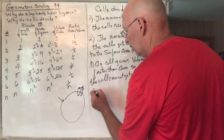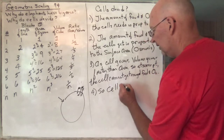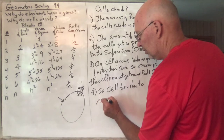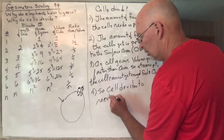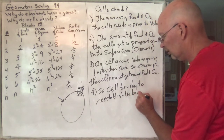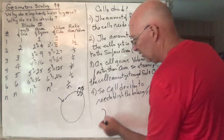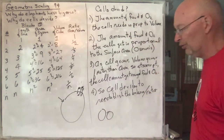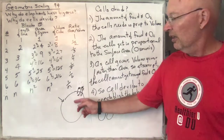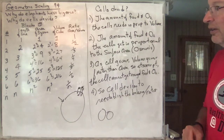So what does it do? The cell divides to re-establish the balance — the balance of the ratio. Once it divides, now you've got a whole lot more surface area for your volume. That's why you don't have big cells this size in your body — they're all fairly small. It's all dictated by this.